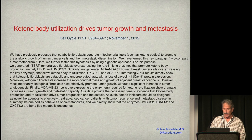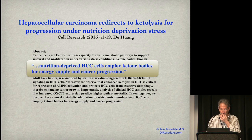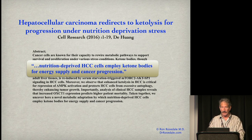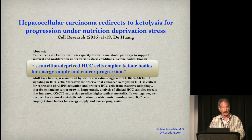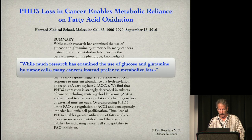Ketone body utilization also drives tumor growth and metastases. Nutrition-deprived cancer cells employ ketone bodies for energy supply and cancer progression, just as normal cells do. The thing is, ketones are also burned in mitochondria. In other words, mitochondria are apparently being used for lots of things here.